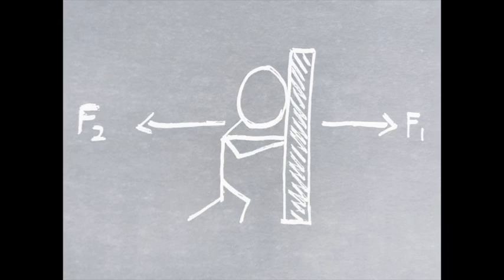G is the gravitational constant, the m's are the two masses attracting each other, and r is the straight line distance between the two point masses.